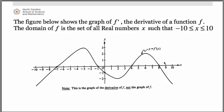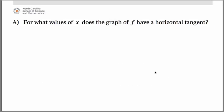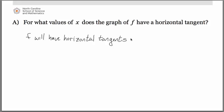Given that you're looking at the graph of the derivative, where would the original function have a slope of 0? It would be at the x-intercepts of the derivative graph, because the x-intercepts of f prime are where f prime equals 0, which means the slope is 0 on the original curve f. From this graph, we have four such locations. Therefore, f will have horizontal tangents where f prime equals 0 — that is, at x equals negative 7, negative 1, 4, and 8.